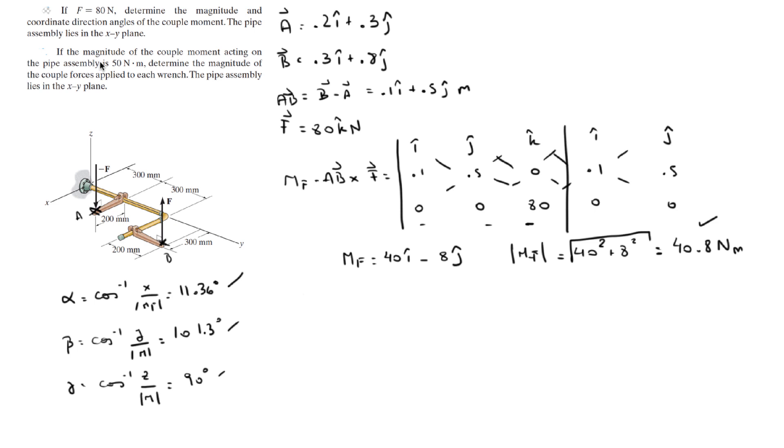if the magnitude of the couple moment acting on the pipe assembly is 50 newton meters, determine the magnitude of the couple forces applied to each range. This is very easy to find,